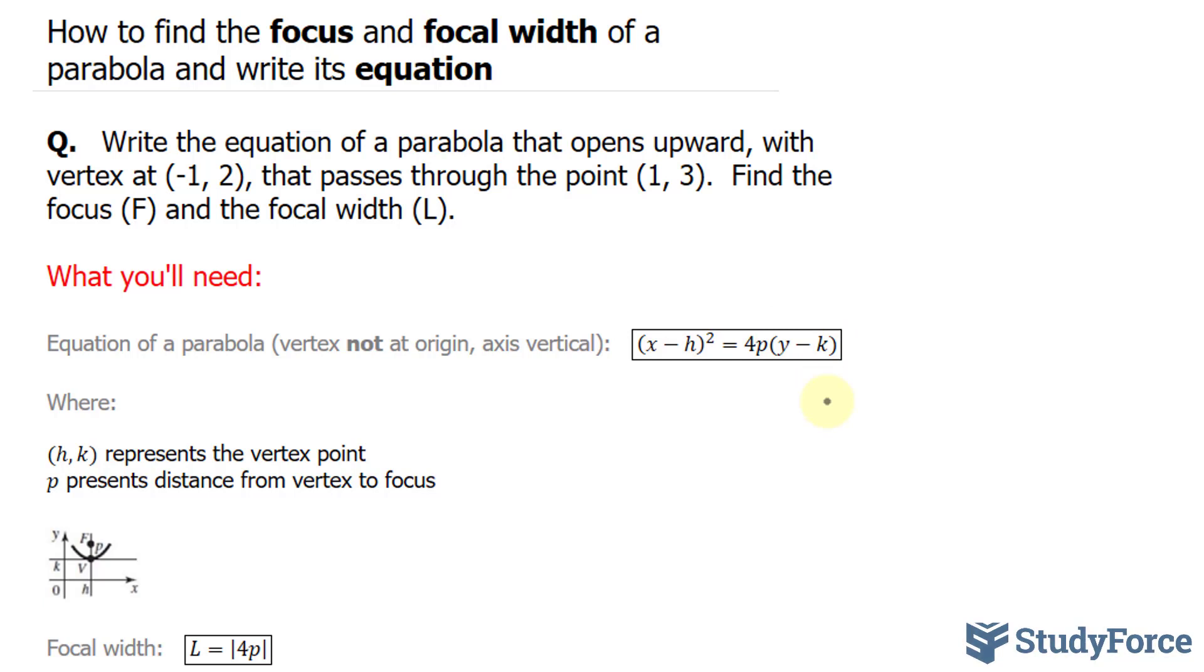So the first thing that I'll do is substitute the coordinates of the vertex into h and k. Following that, I can solve for p. Let me show you what I mean.